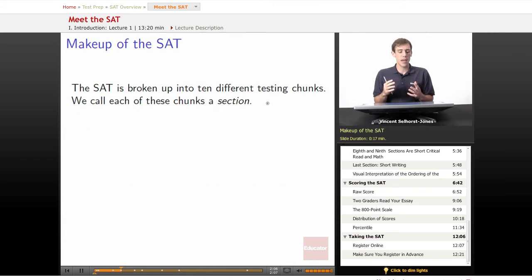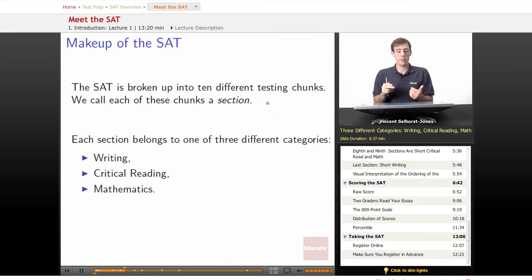How is the SAT made up? The SAT is broken up into 10 different testing chunks. We're going to call each of these chunks a section. That's the name for one of these testing chunks. There'll be some brief period of time, generally 25 minutes, that you'll have to work on a section. Each section belongs to one of three different categories: writing, critical reading, and mathematics.